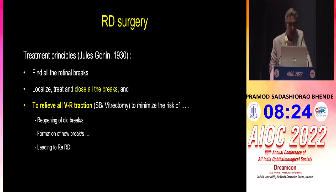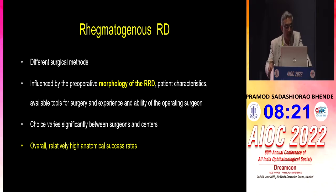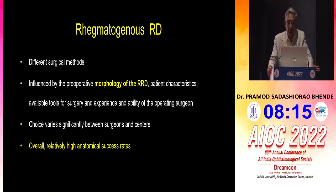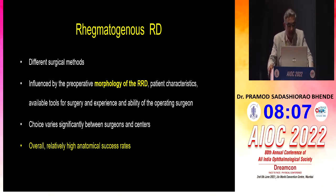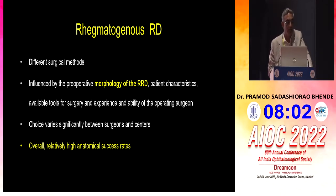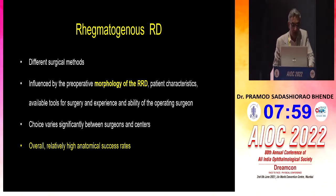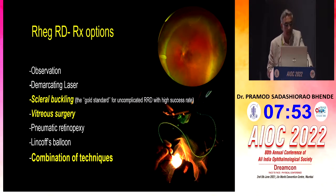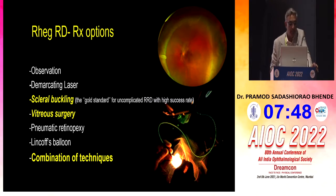This way you can minimize the risk of recurrent detachment. We have different surgical methods, which are definitely influenced by the morphology of the detachment — that's the most important factor — other patient characteristics, available tools for surgery, and experience of the operating surgeons. Choice varies significantly between surgeons and centers and also how you were trained. Overall, there is a relatively high anatomical success rate in experienced surgeons' hands. Various techniques include scleral buckling, vitrectomy, and combinations of these techniques, which are more commonly used nowadays.